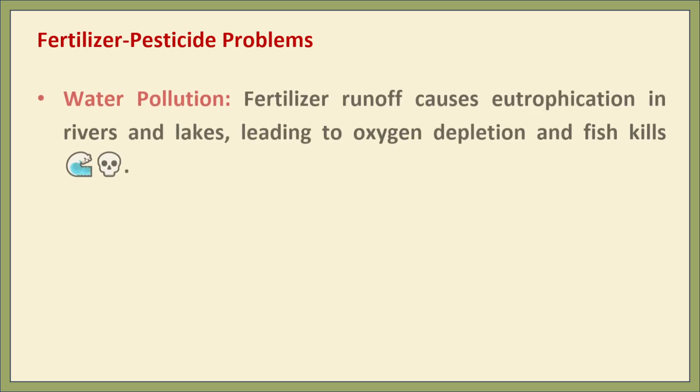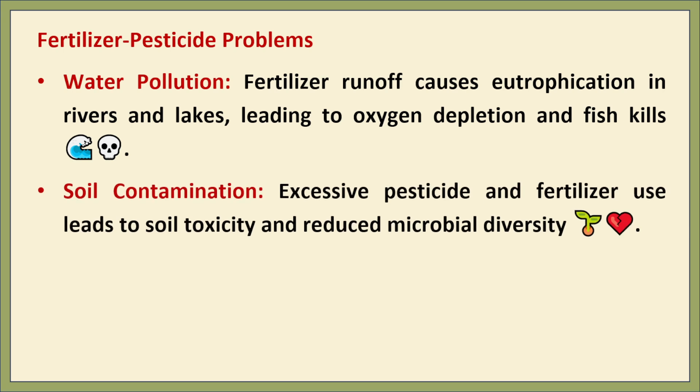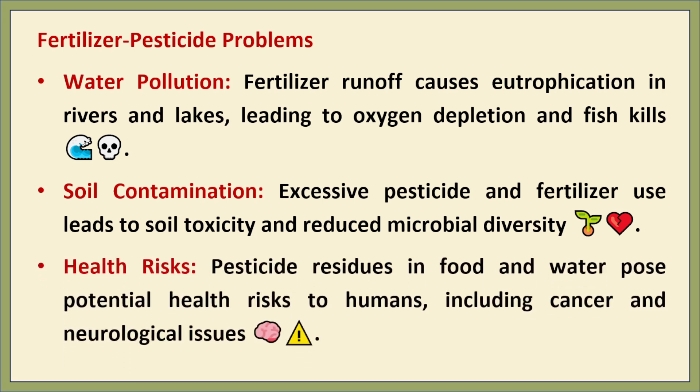Fertilizer and pesticide problems. The overuse of fertilizers and pesticides leads to several environmental and health issues. Water pollution: when fertilizer runoff enters nearby rivers and lakes, it causes eutrophication and overgrowth of algae that depletes oxygen and kills aquatic life. Soil contamination: excessive use of these chemicals can make soil toxic, reduce microbial activity and lower its fertility over time. Health risks: residue from pesticides can enter the food chain and drinking water, and long-term exposure is linked to serious health issues like cancer, hormone disruption and neurological problems.